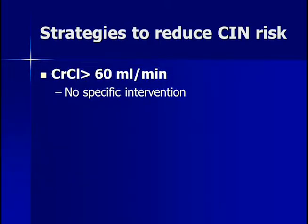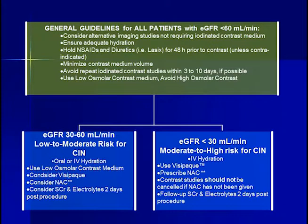Strategies to reduce contrast-induced nephropathy: in patients with creatinine clearance greater than 60 mL per minute, no specific intervention is required. For those with clearances between 30 and 60, or less than 30, several options exist. For low to moderate risk patients, either oral or IV hydration is recommended, use of low osmolar contrast medium such as Visipaque, consideration of N-acetylcysteine, and checking serum creatinine after two days. For moderate to high risk patients with very low eGFR, IV hydration and low osmolar agents such as Visipaque are required. Contrast should not be done if not necessary, and consideration should be given to sodium bicarbonate or N-acetylcysteine. Follow-up serum creatinine and electrolyte levels are recommended two days later.